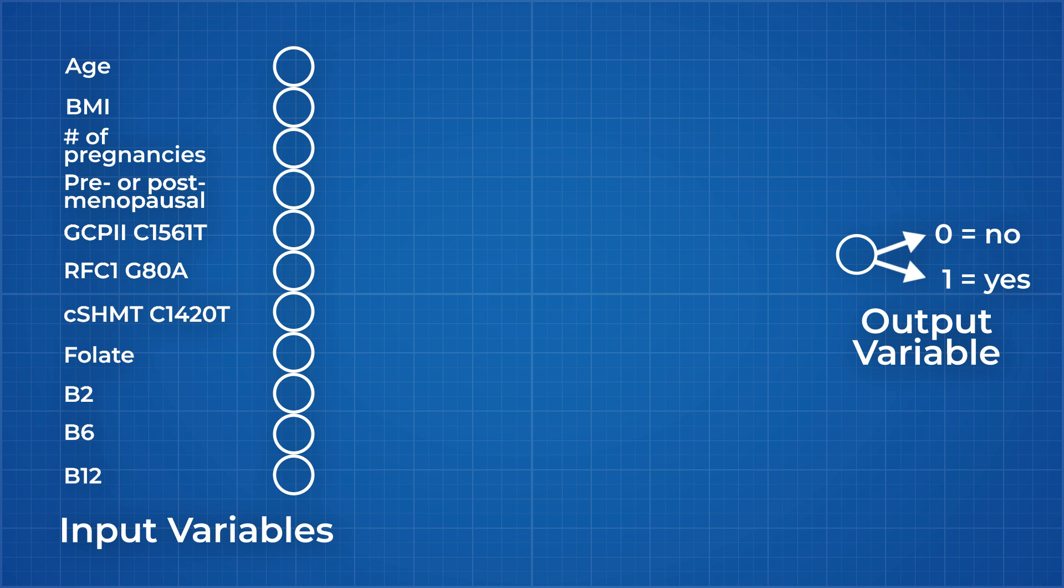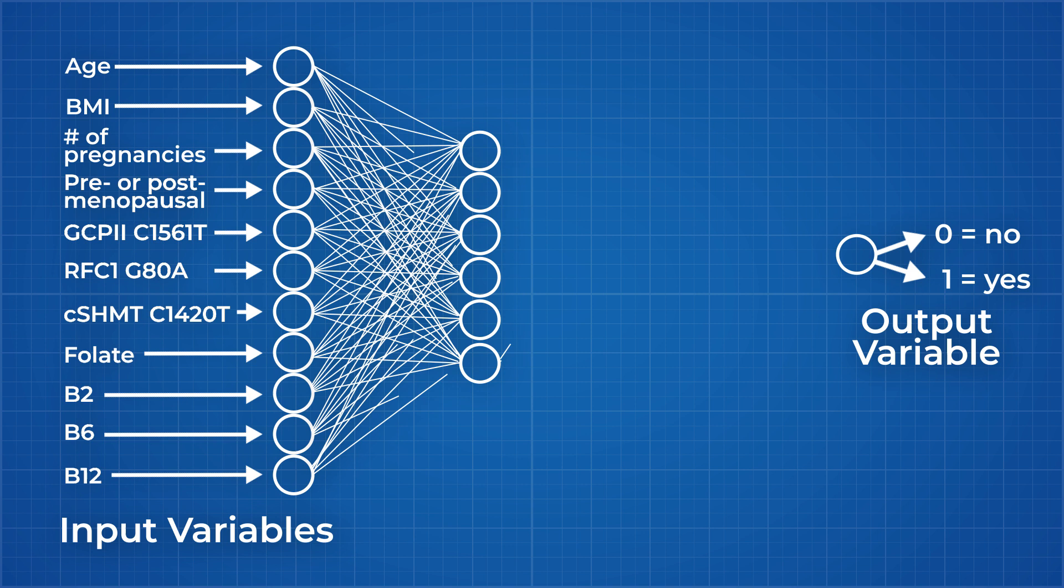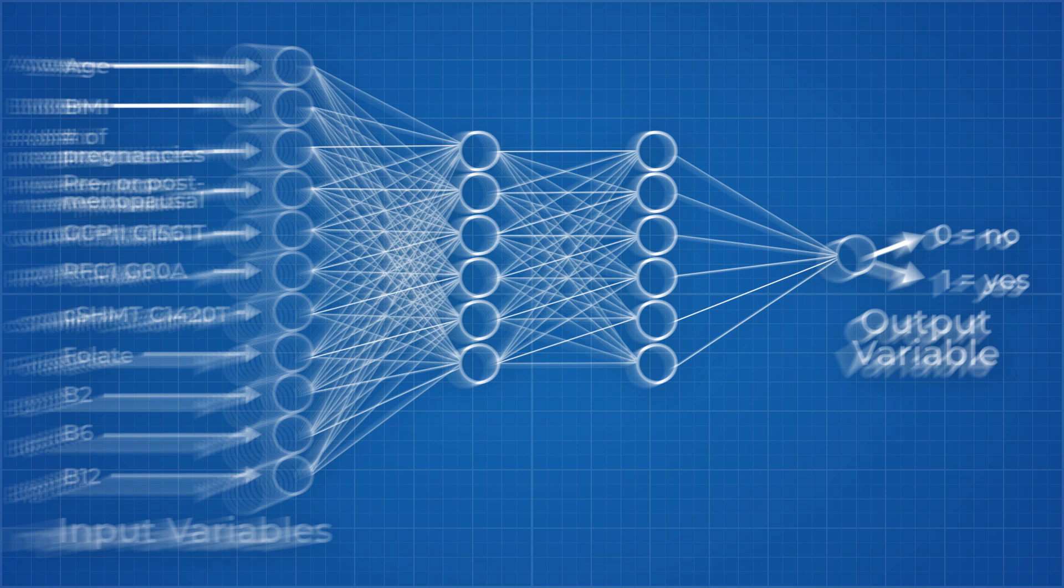Each layer receives inputs from the layers to its left. As the inputs move between layers, they are multiplied by random weights which can be assigned to each of the connections they travel along. Individual weights represent the strength of connections between layers, and are the most important factor in converting the input layer to the output layer.